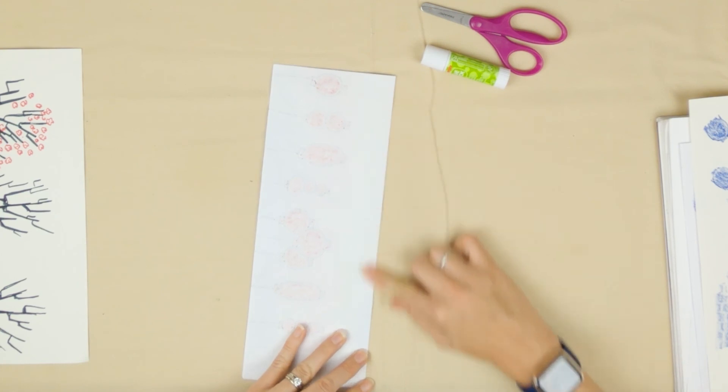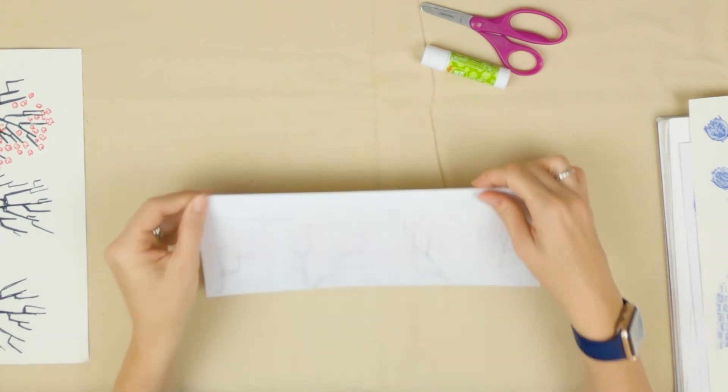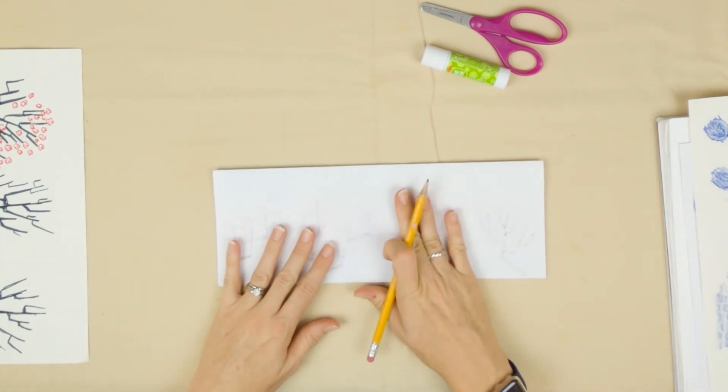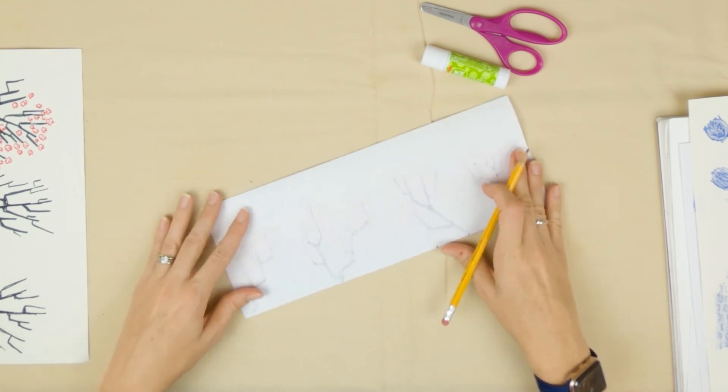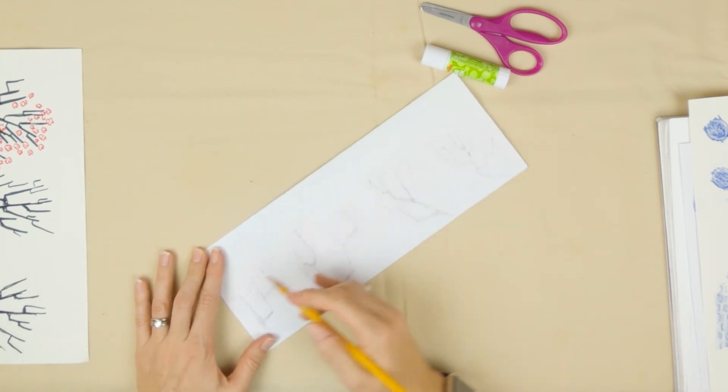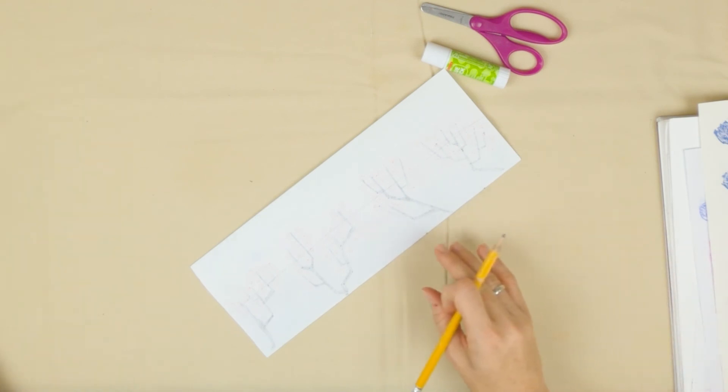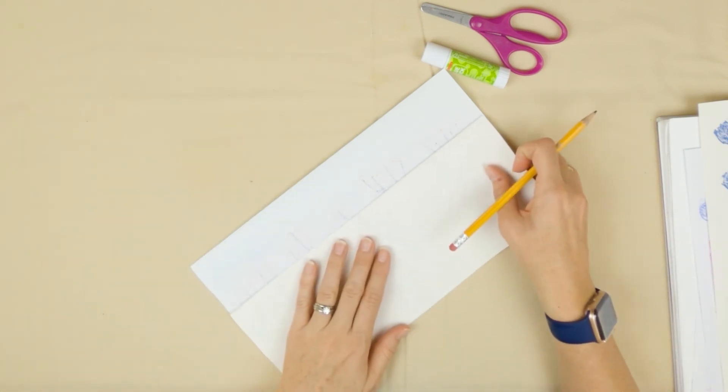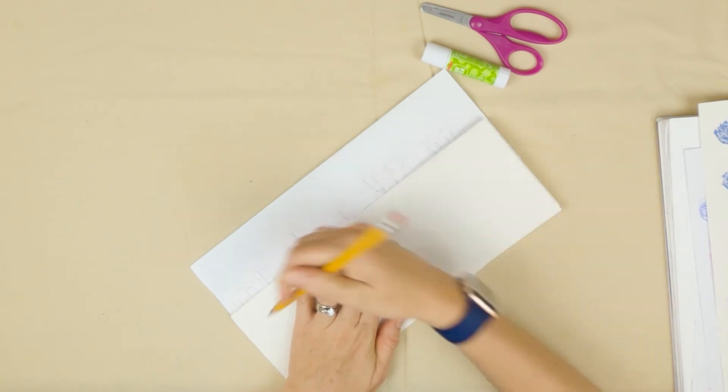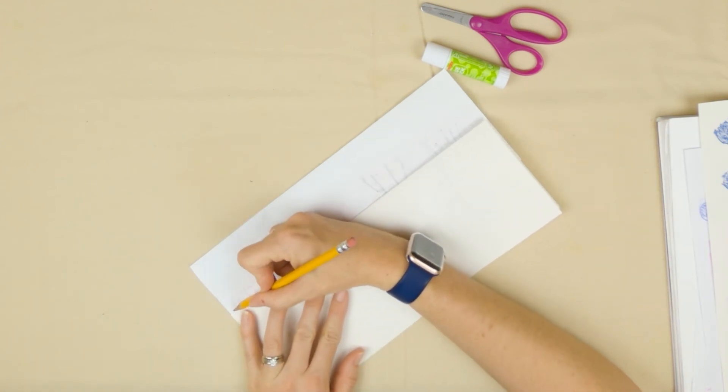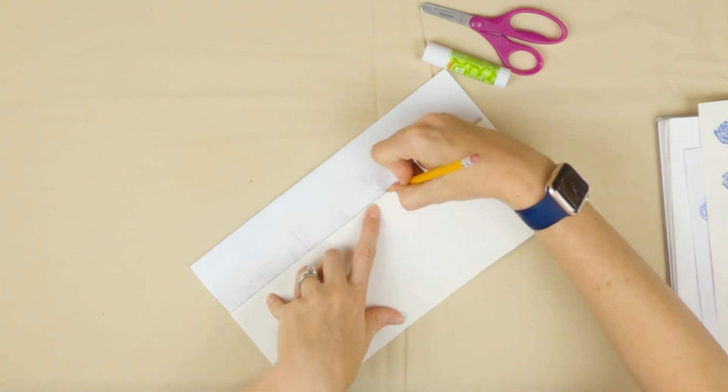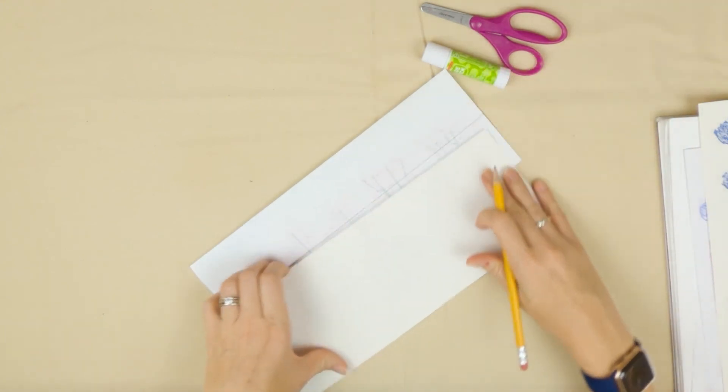Once that's folded, we're now going to create some lines. I have a pencil, I forgot to mention you'll need that too. So if you need to pause the video, go get that. I'm going to eyeball and do a line down the middle of my page here. You could use a ruler and it doesn't have to be exact, it just kind of gives you a guideline of where you're going to cut to.